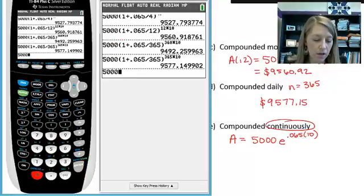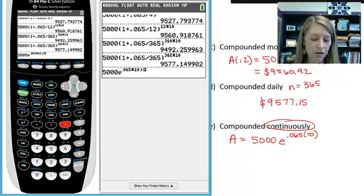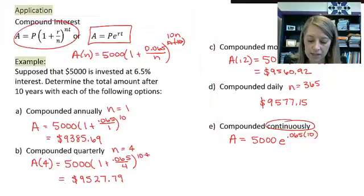So all I need to do now is type that in my calculator. 5,000, use my e function, 0.065 times 10. Or if you could do your math in your head, that would be perfectly fine. And so we see we get $9,577.70.